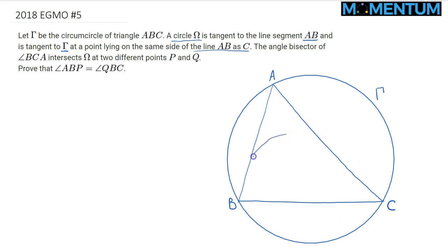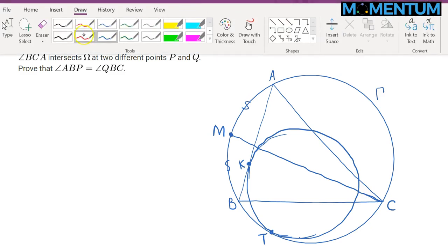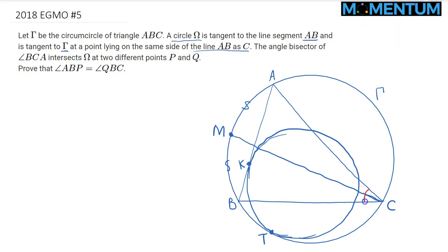Let me draw this configuration. I have the tangency point T here, and I'll label this point as K. I'll label M as the midpoint of arc AB, where the angle bisector at C meets the arc. I'll mark these two angles as congruent angles.